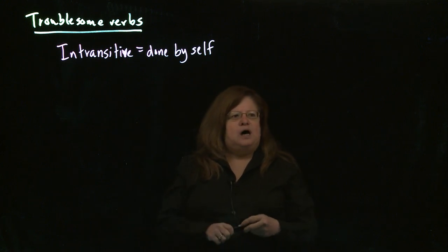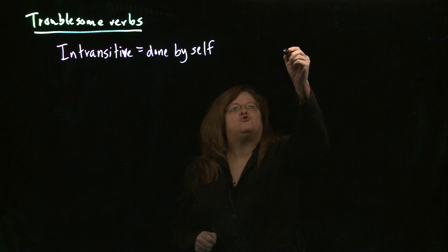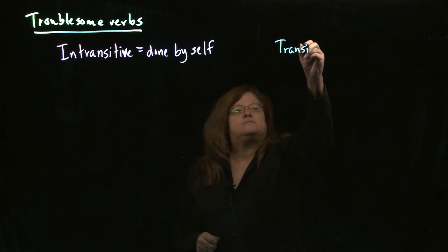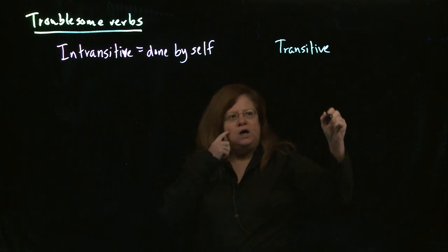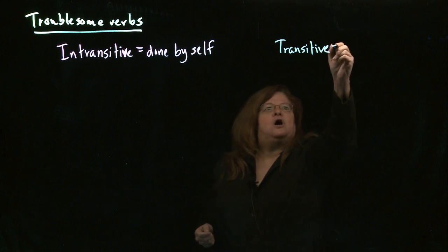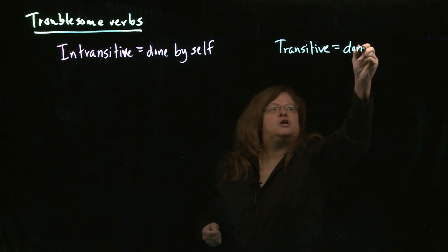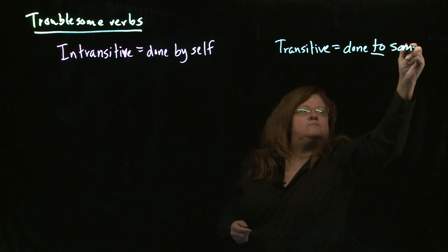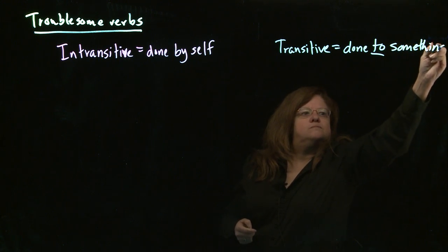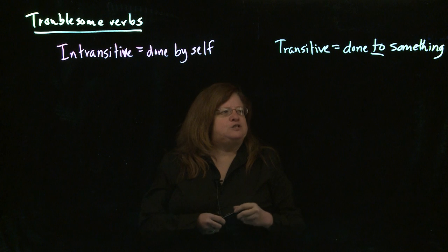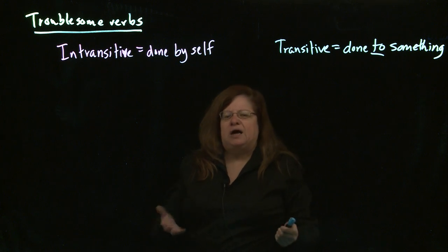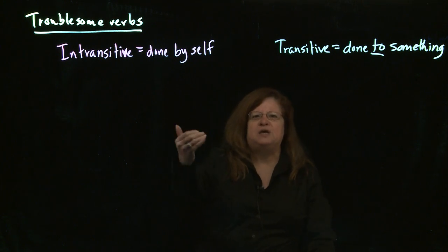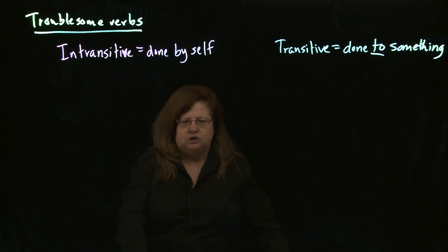The other form of verb is called transitive. Transitive verbs are verbs that are done to something — meaning a transitive verb has a direct object that is being acted upon.